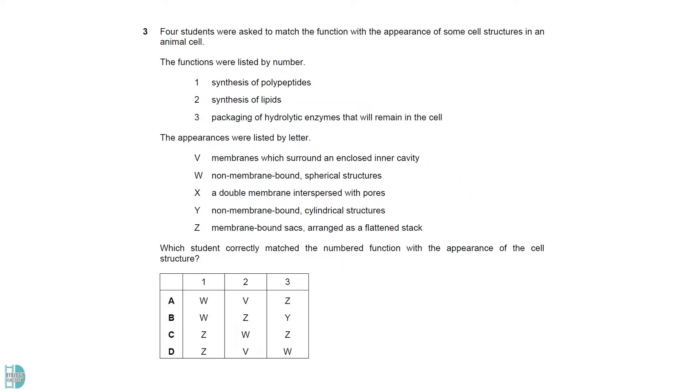Let's identify 1 to 3. Ribosomes synthesize polypeptides. Lipid synthesis is a function of smooth ER. Hydrolytic enzymes are packaged by the Golgi body into lysosomes to remain in the cell. Now let's look at the description of their appearances. V is the smooth ER. W is non-membrane bound and spherical, it is a ribosome. X has a double membrane and pores, it is the nucleus. Y is cylindrical and non-membrane bound, so it is the centriole. Z is a description of the Golgi body.